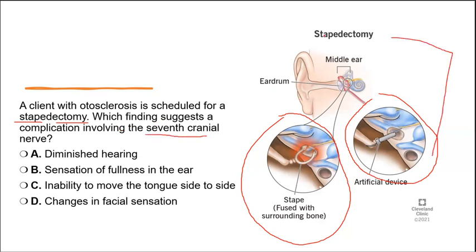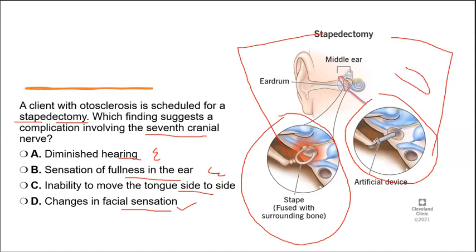The question asks: which finding suggests a complication involving the seventh cranial nerve after a stapedectomy? Seven is my facial nerve, so changes in facial sensation is the answer. Diminished hearing is expected post-operatively; sensation of fullness is also expected; inability to move the tongue side to side involves CN 12. So the correct answer is changes in facial sensation.